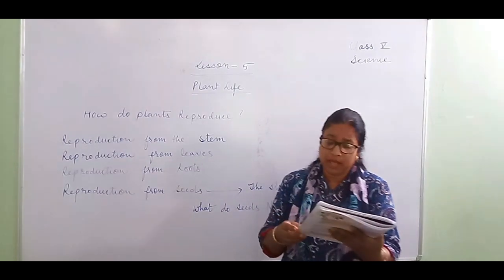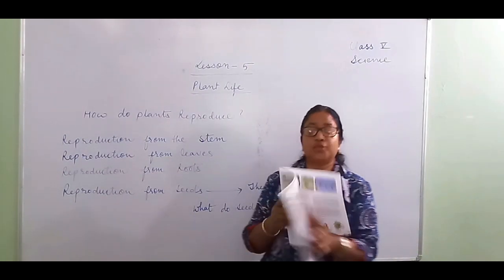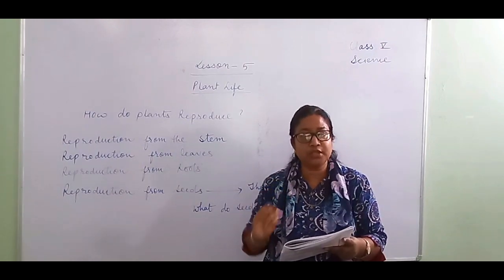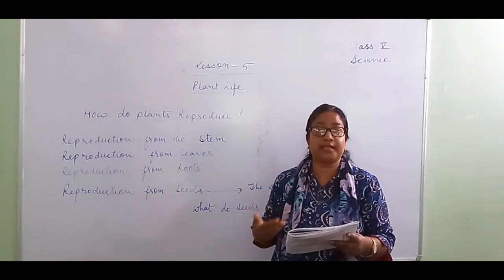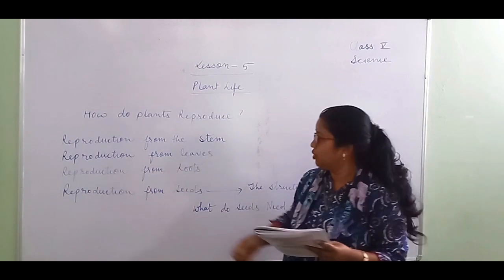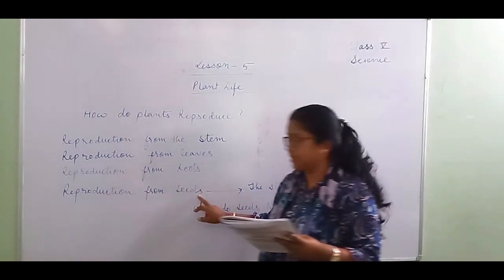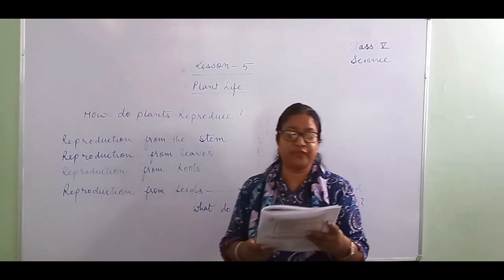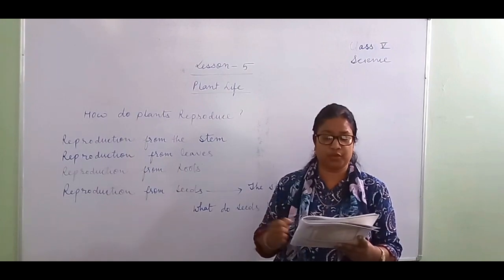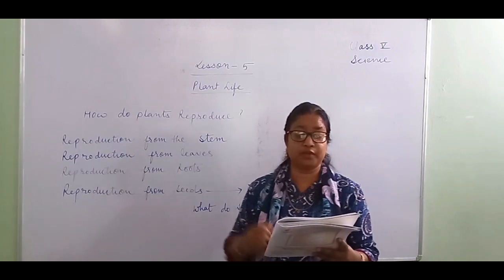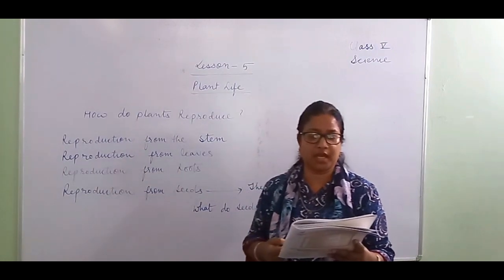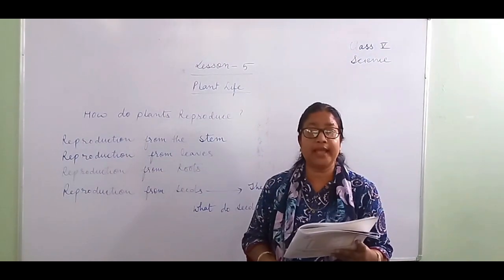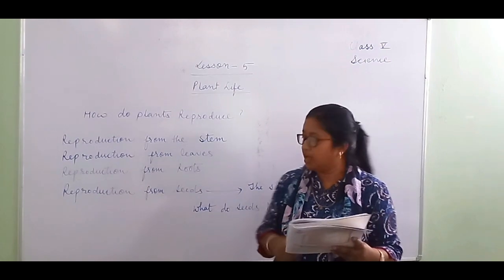Note how many days it takes for the plant to grow — you can do this at home. Now, reproduction from the seed: most plants grow from seeds. Seeds are usually found inside the fruit and come in different shapes and sizes. New plants grow when seeds fall on the soil and germinate.